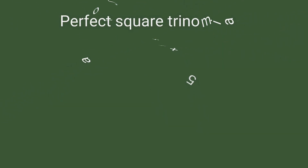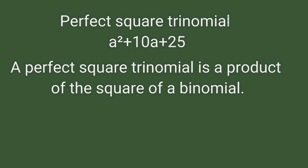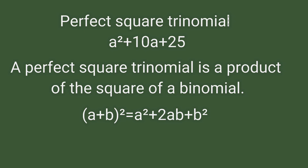A perfect square trinomial looks like this: a squared plus 10a plus 25. A perfect square trinomial is a product of the square of a binomial. I have already discussed this and will paste the link in the description below.